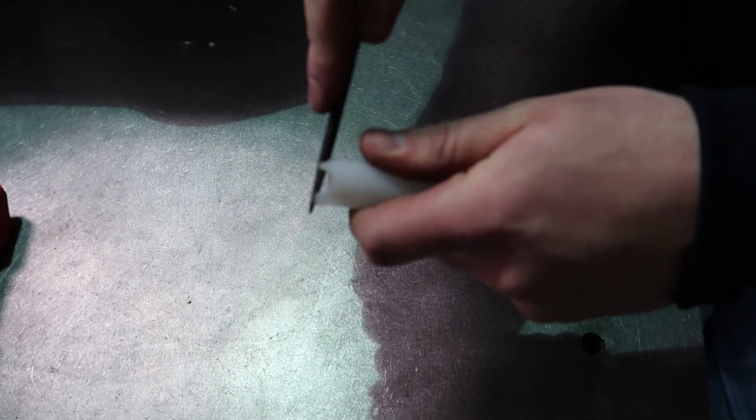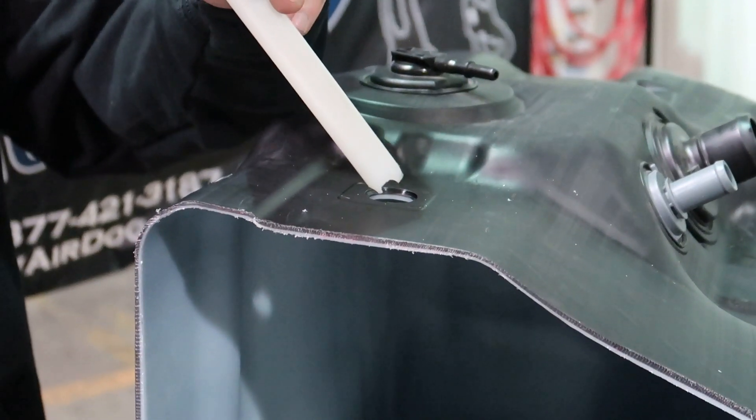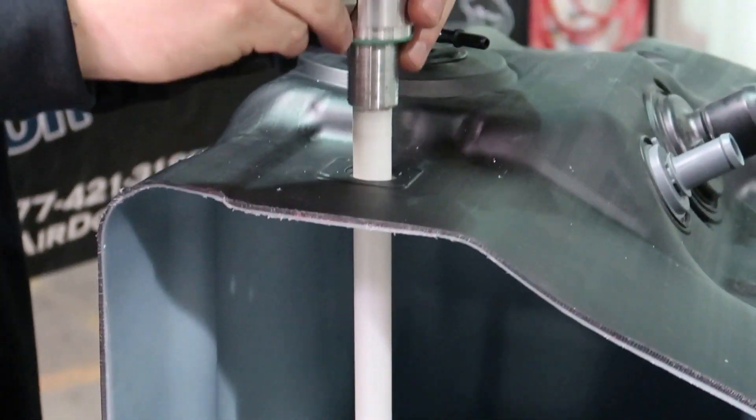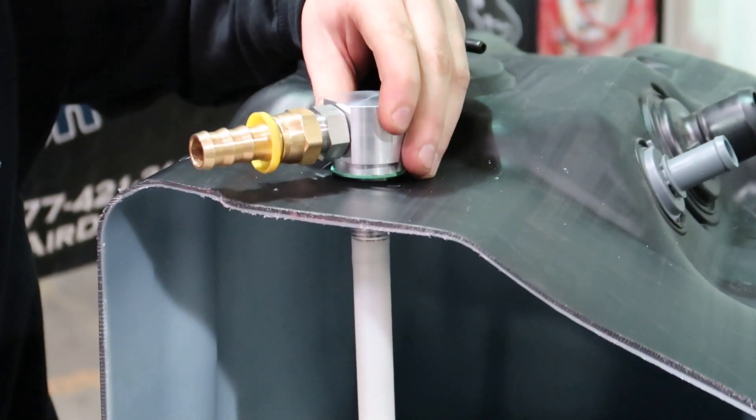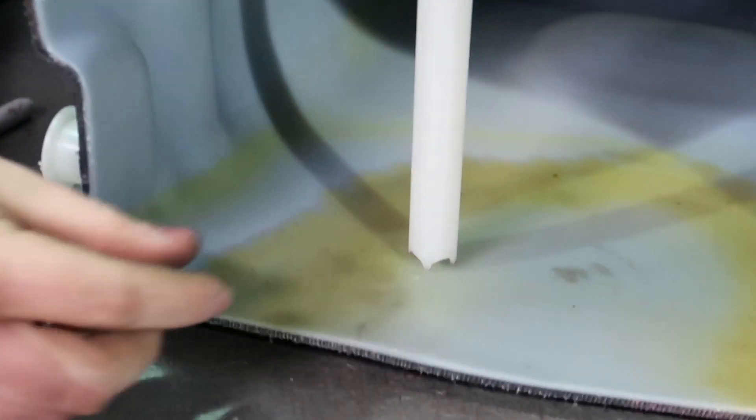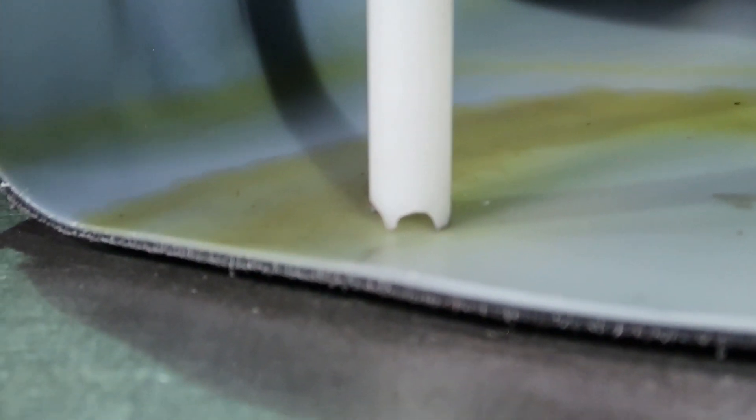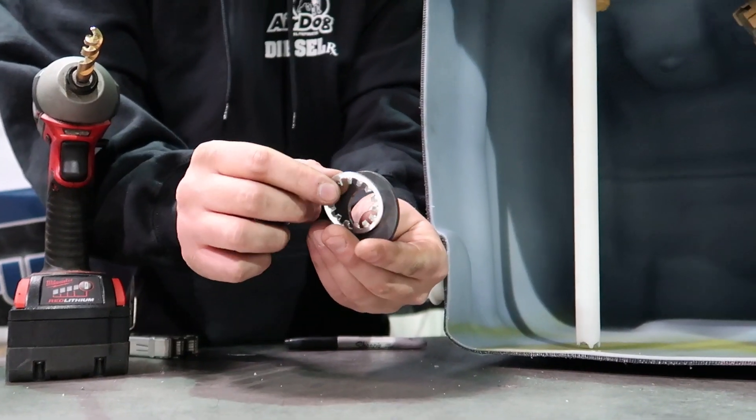Use a file to deburr any sharp or loose plastic on the draw straw and then install into the fuel tank. You can see we've got perfect length. The tank will belly down a little bit once it is filled full of fuel.